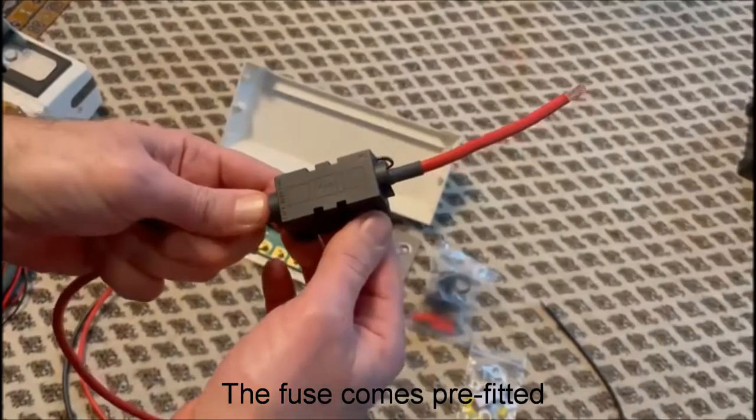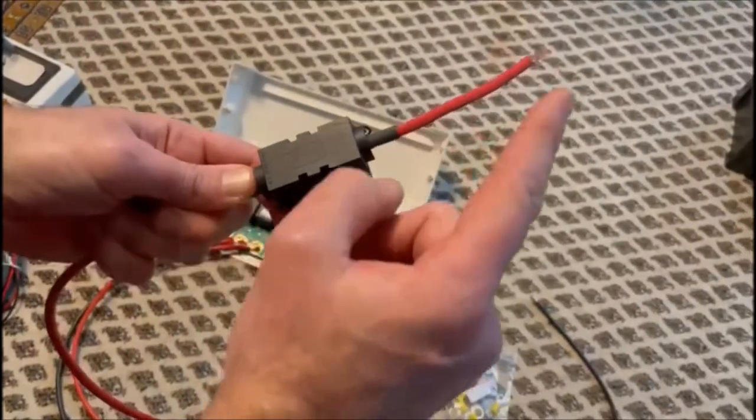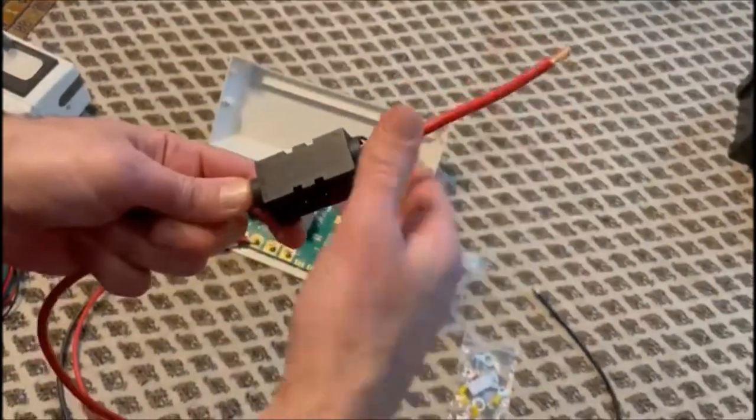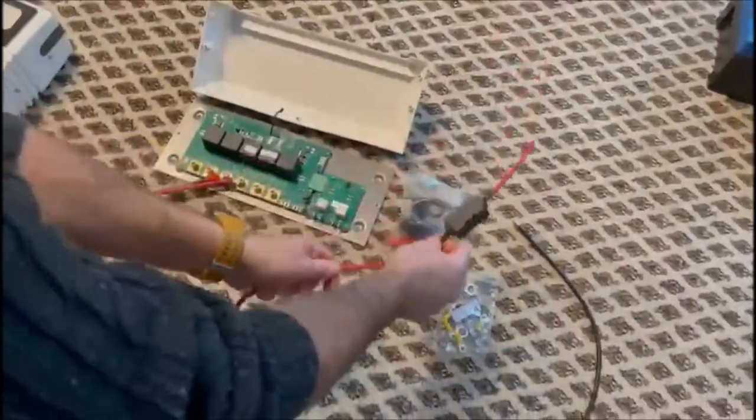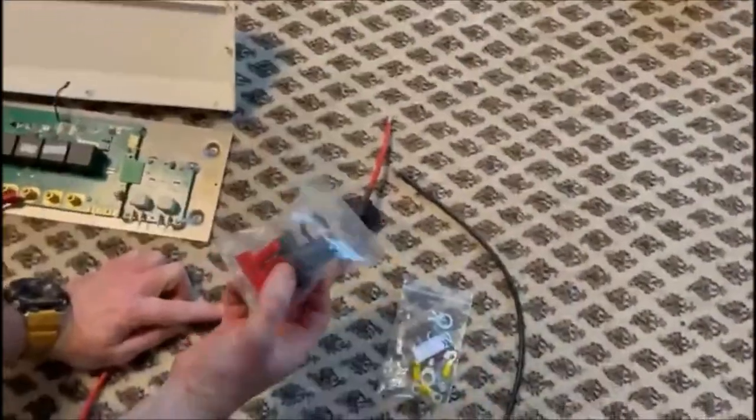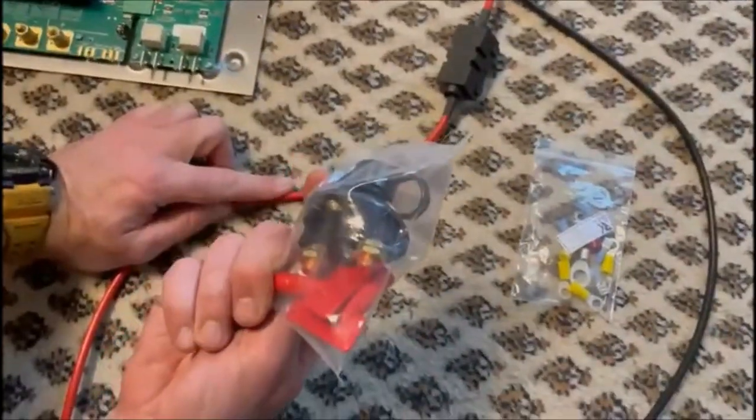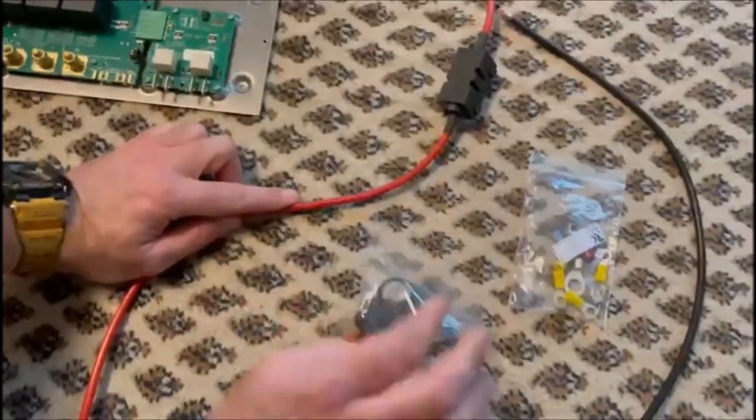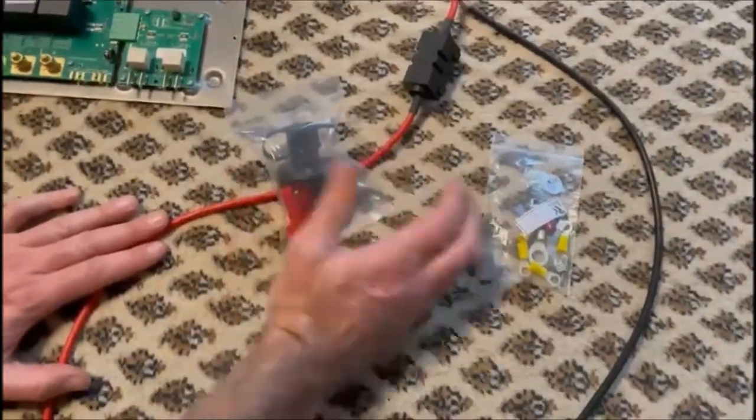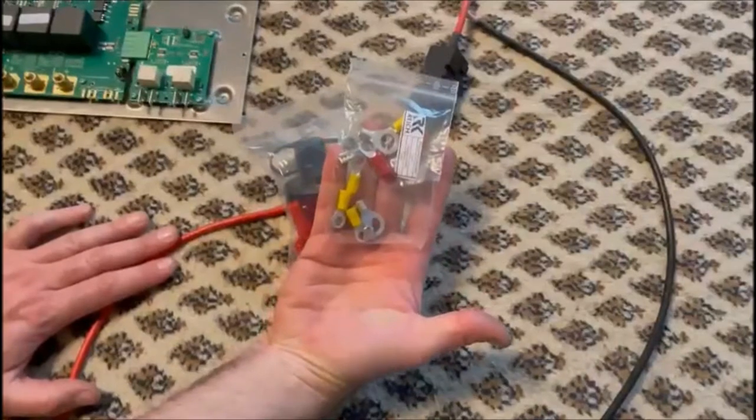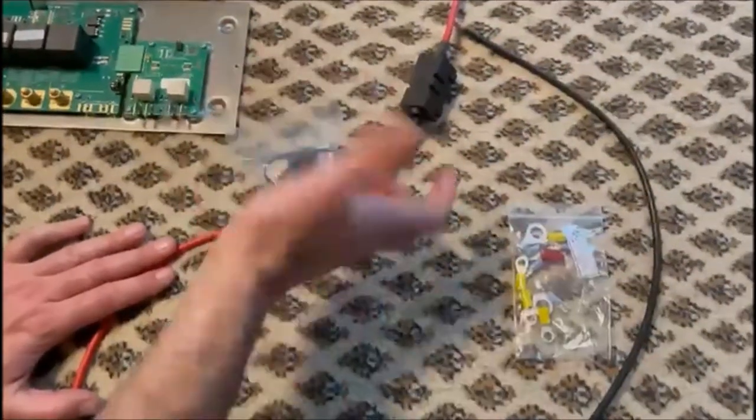There's a 150-amp fuse fitted on there, and that must be fitted as close as possible to your power source, so you can't shorten that. What you will need to do, and it's supplied in the kit as we mentioned earlier, is this master cutoff switch. And if you are using a normal battery and you don't have any other switch, you'll need to wire this in using all of the connectors they've given you in order to be able to shut off the power from the battery coming to this terminal box.